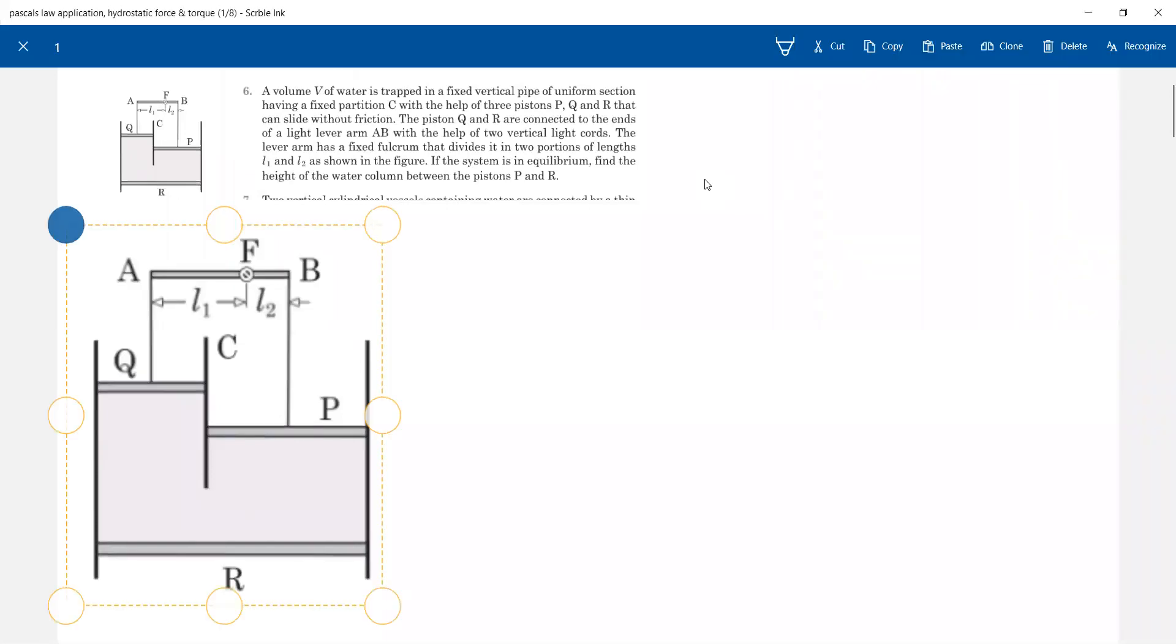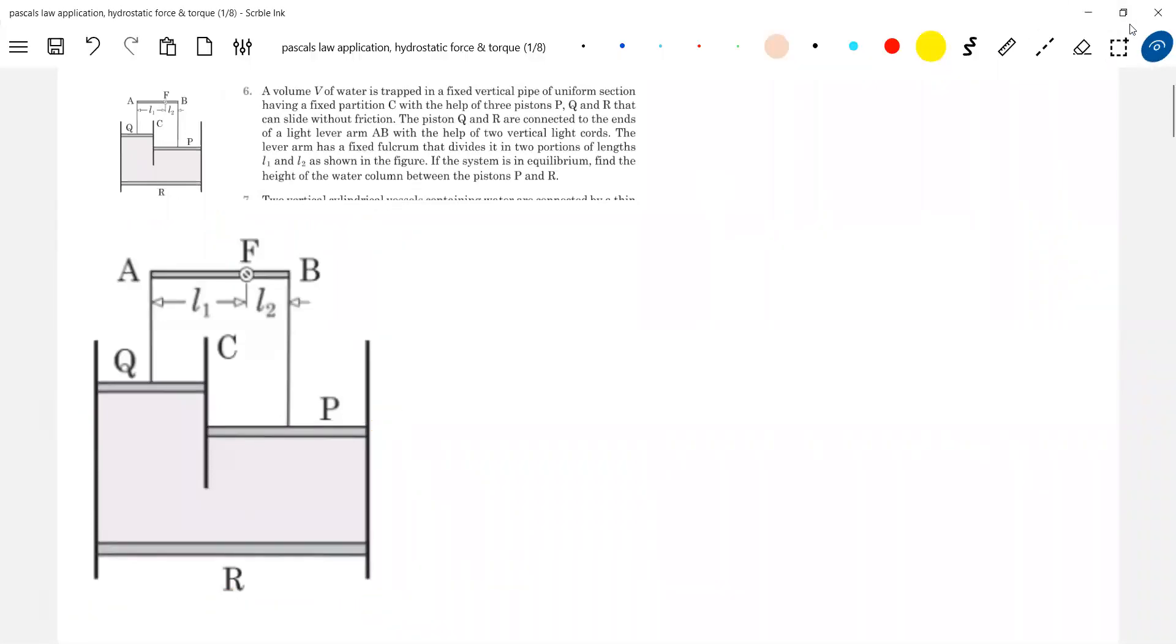This is what the liquid here, for the liquid. So we do have a volume B of water being trapped in a fixed vertical pipe of uniform cross-section with a fixed partition C. So there's a partition.